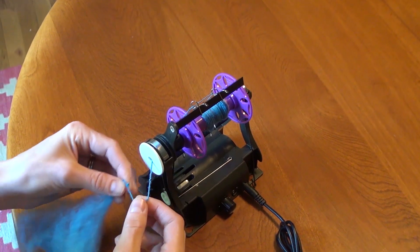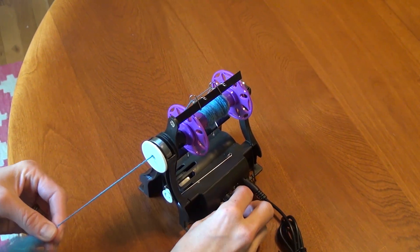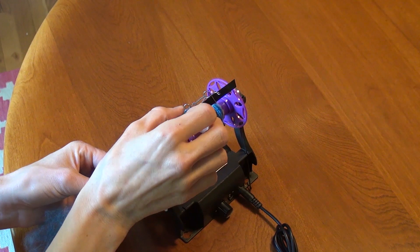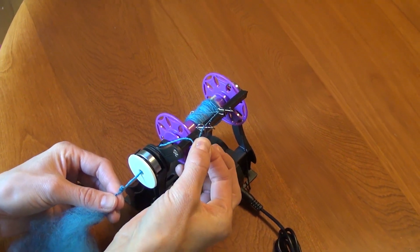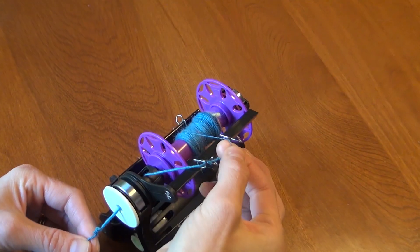So if that happens and you have no uptake, you should wind the bobbin manually until all those chunky parts are on the bobbin and you can start spinning normally again.